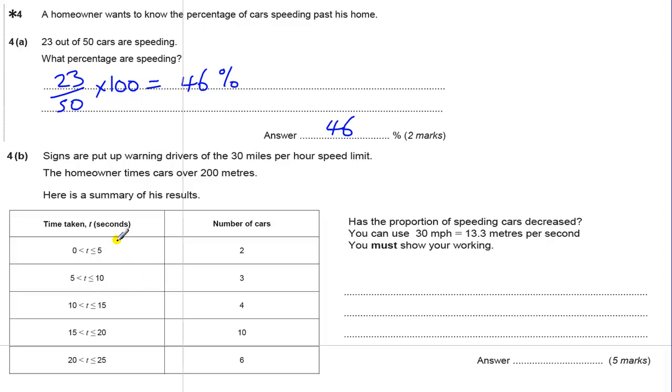Part B has a lot of information here. You've got a table - difficult to know where to start. But essentially, when you've read it through a few times, you've got to figure out how many of these are going above the speed limit. To do that, we need to work out how long it takes somebody going at the speed limit to do the 200 meters.